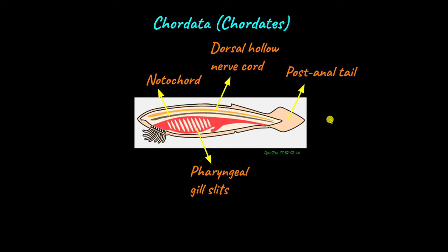Take a look at yourself. Do you have a post-anal tail? Or do you have gills? How are we Chordates then? An important thing to remember here is that Chordates need not have these structures throughout their life cycle. If an animal has all four characters at some point in its life, it is enough to classify it as a Chordate.